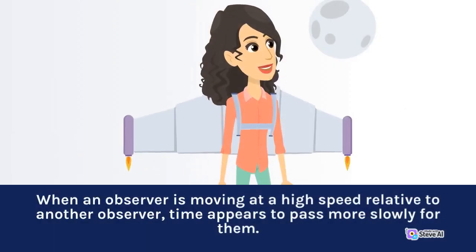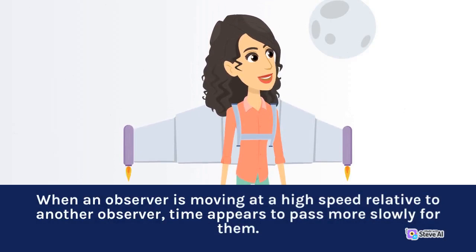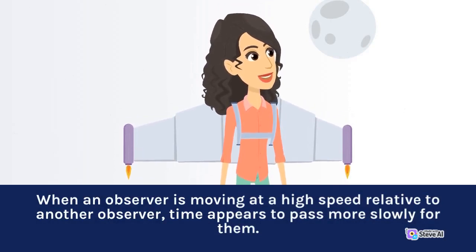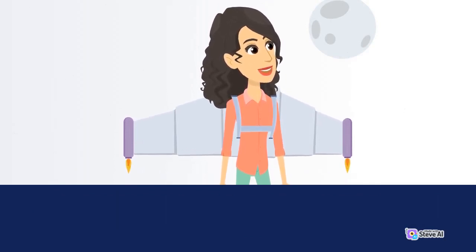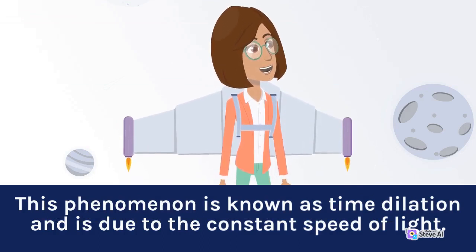When an observer is moving at a high speed relative to another observer, time appears to pass more slowly for them. This phenomenon is known as time dilation and is due to the constant speed of light.